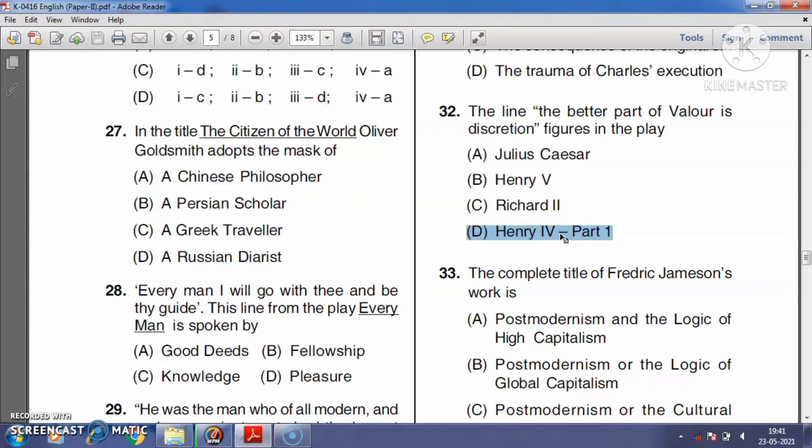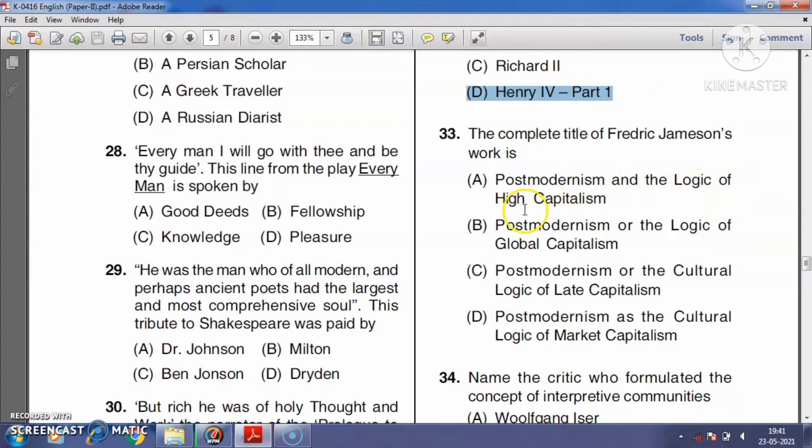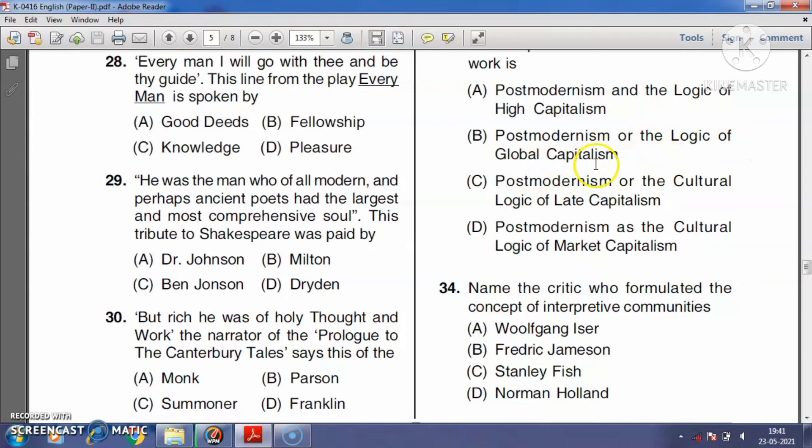Question number thirty-three: The complete title of Fredric Jameson's work is postmodernism and the logic of high capitalism, postmodernism or the logic of global capitalism, postmodernism or the cultural logic of late capitalism, or postmodernism as the cultural logic of market capitalism? Postmodernism or the Cultural Logic of Late Capitalism is a book by Fredric Jameson, published in 1991, in which he offers a critique of modernism and postmodernism from a Marxist perspective. The right answer is option C.